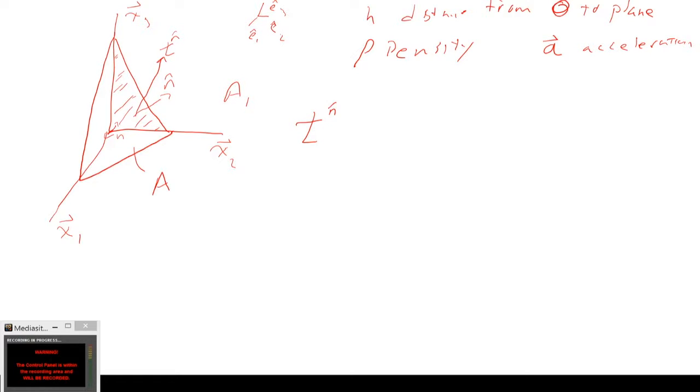So we've got the traction on the normal times the area. Now we have the traction on this face, the traction on this face and the traction on this face: traction on e1, e1 dA1 minus the traction on e2 dA2 minus the traction on e3 dA3. And that equals the force equals mass, so that's going to be our density of our tetrahedron times our acceleration. This is just our mass.